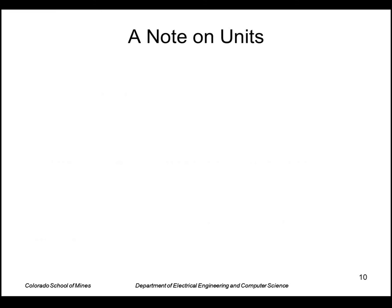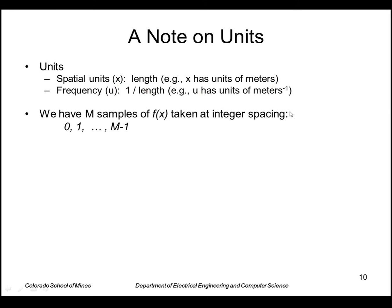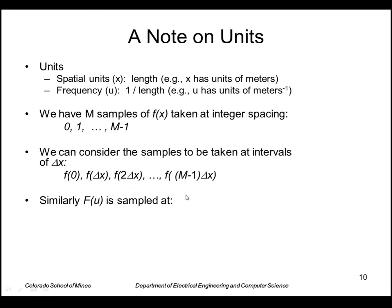Just a note on units, how spatial units relate to spatial frequency. So we can think of x as having length, say meters, frequency has units of one over length. So if we have a function that we sample at these integer spacings, that actually represents a function sampled at these points, namely f of zero, f of delta x, f of 2 delta x, et cetera. Similarly, we have the transform, and that represents frequencies at zero frequency, frequency of delta u, 2 delta u, and so forth.